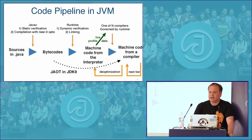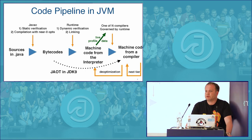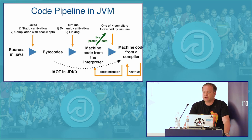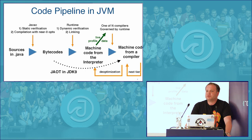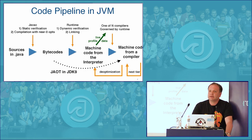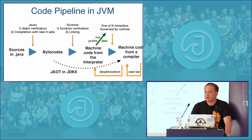The interpreter picks up the bytecode and executes it. Along with execution, the interpreter collects profiles — I'll talk about those shortly. Those profiles include things like the number of times a method was executed and the number of back-branches. Those profiles are fed into the just-in-time compiler. When the method becomes hot enough, the runtime decides to compile it and sends it to the compiler.